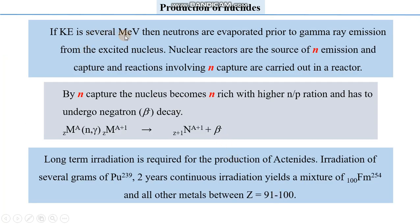If the kinetic energy is several mega electron volts, neutrons are evaporated prior to gamma emission. This depends on the amount of energy provided to the bombarding particle — from the excited nucleus, more than one neutron can be evaporated. If one neutron is bombarded with considerable kinetic energy of several mega electron volts, more neutrons are expected to evaporate, creating further problems of neutron deficiency.